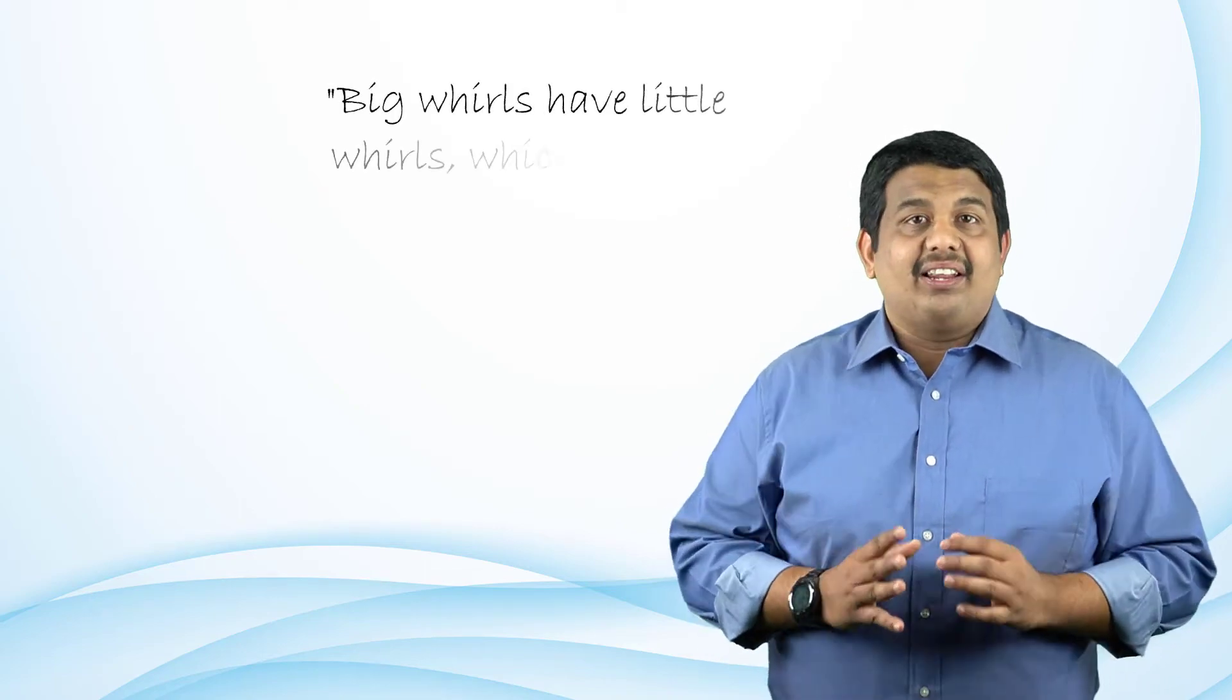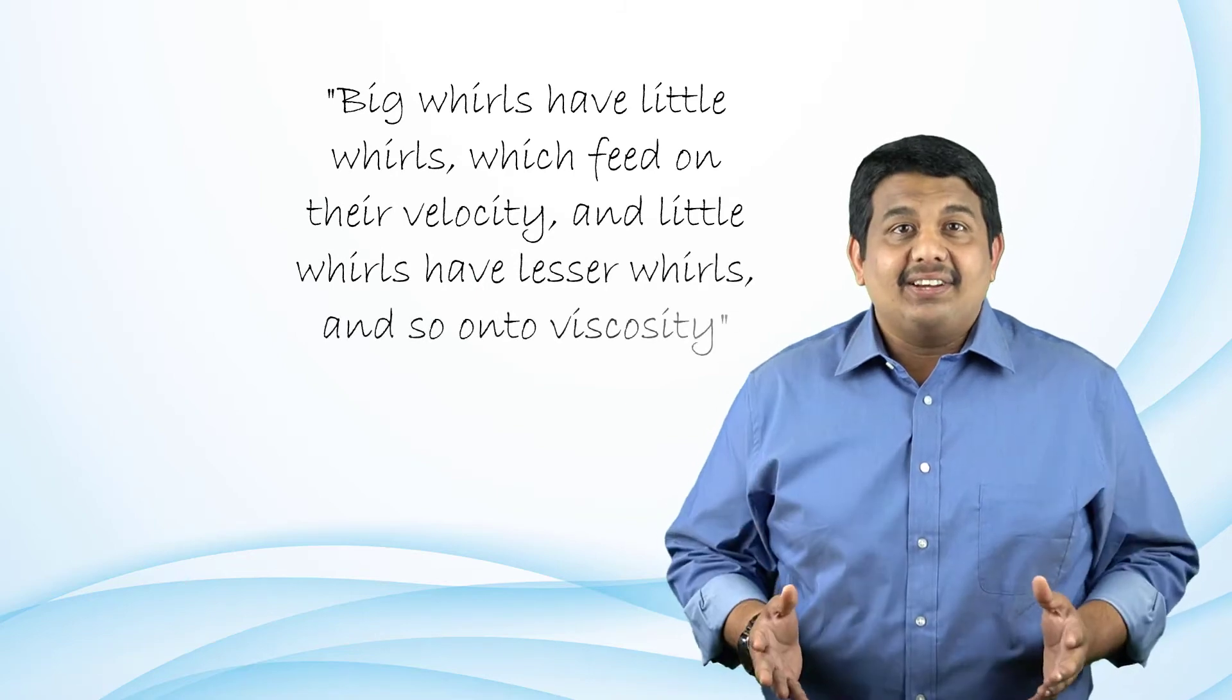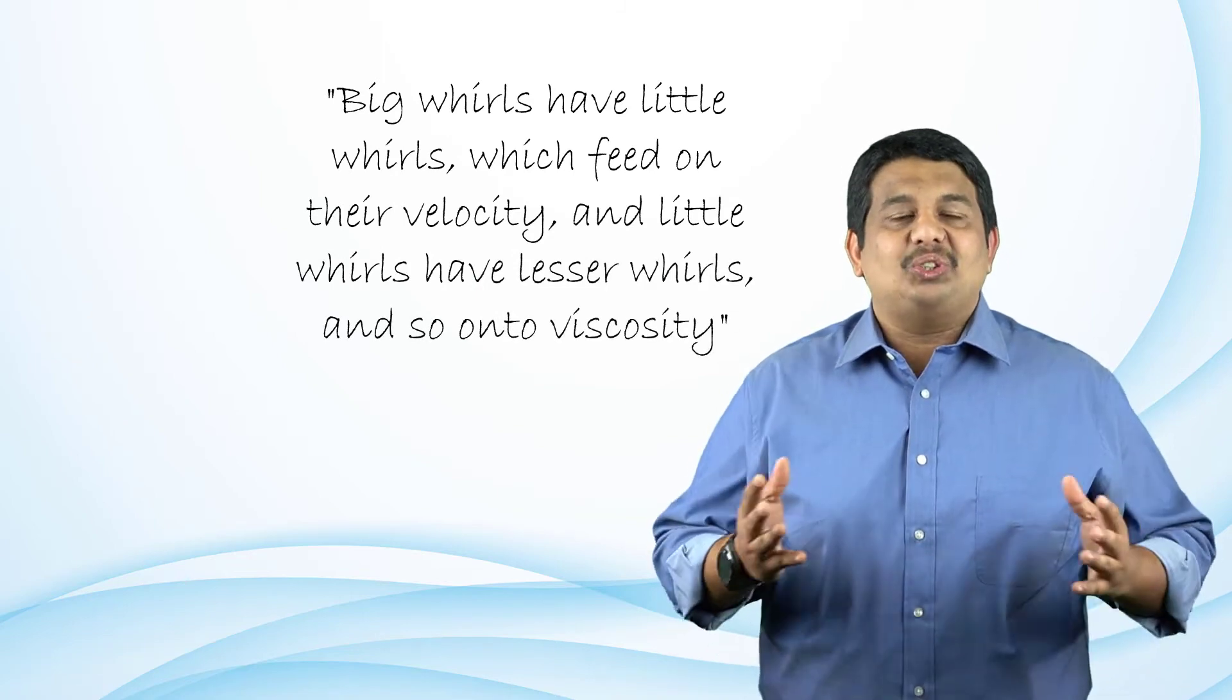Richardson was the first scientist to identify this energy cascade and eloquently worded the process as: Big whorls have little whorls, which feed on their velocity, and little whorls have lesser whorls, and so on to viscosity. Now that we have the knowledge of larger scales of the turbulent flow, let us characterize the smaller scales.